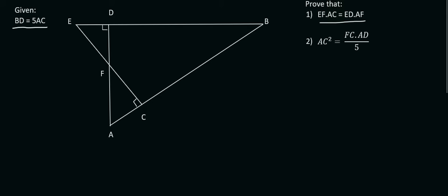It does however mean that we most likely will have to look at similarity. Remember, similarity is all about two different triangles, so we need to investigate which triangles we should work in. EF is over here, AC is over here, ED is over there and AF is over there. So it's clear to see that the two triangles we need to work in will be this one as well as this one.